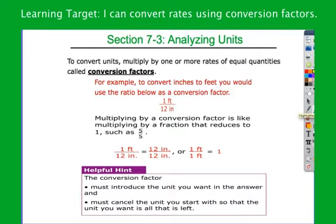Rather than just saying I have three miles and multiplying by 5,280, we're going to use something called conversion factors. That's going to seem a little abstract and unnecessary, but stick with me and you'll see how it does make this easier — especially when converting a rate where you have two different units going on. It really takes a lot of the thinking out. Conversion factors are rates where the top equals the bottom.